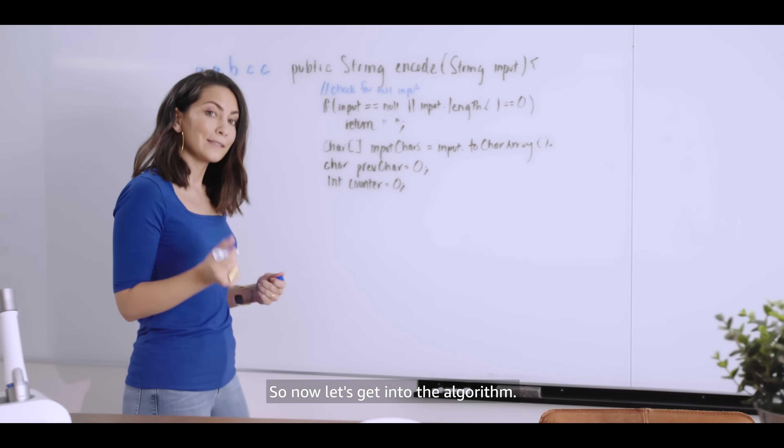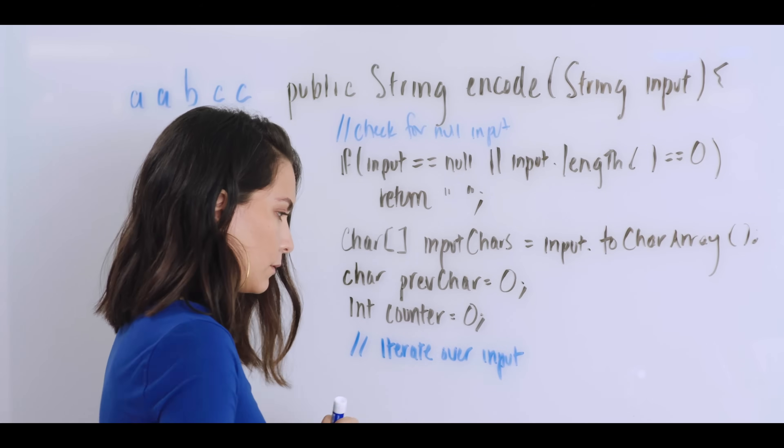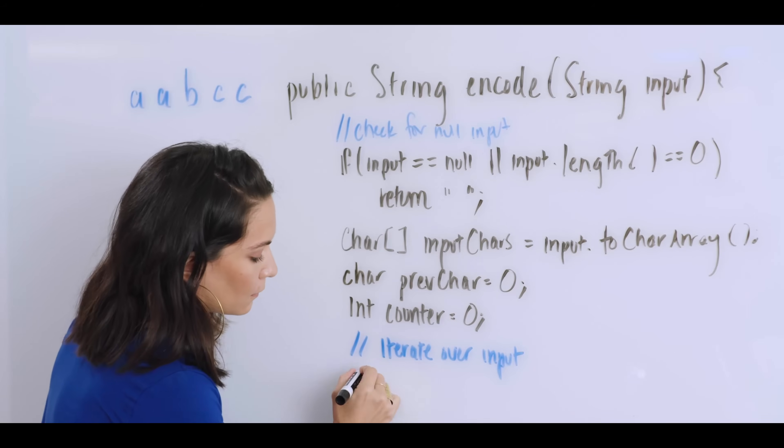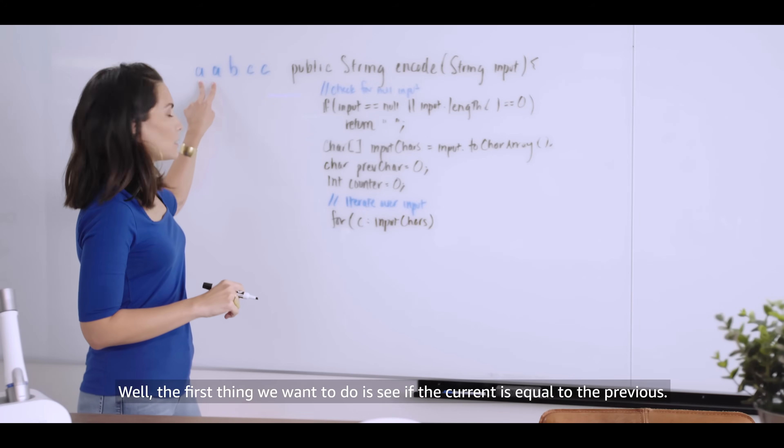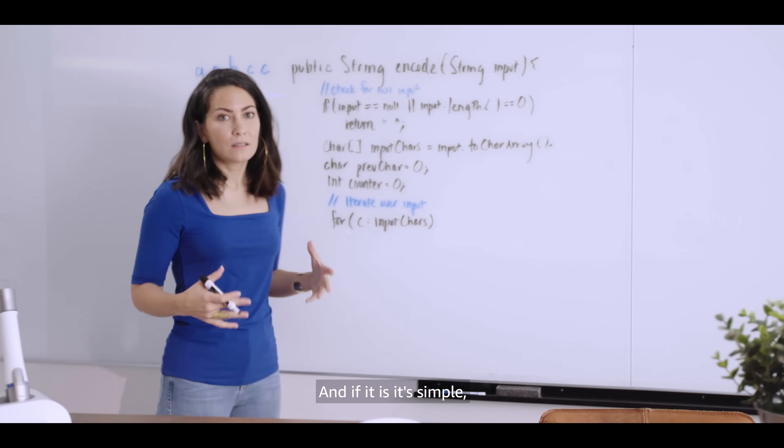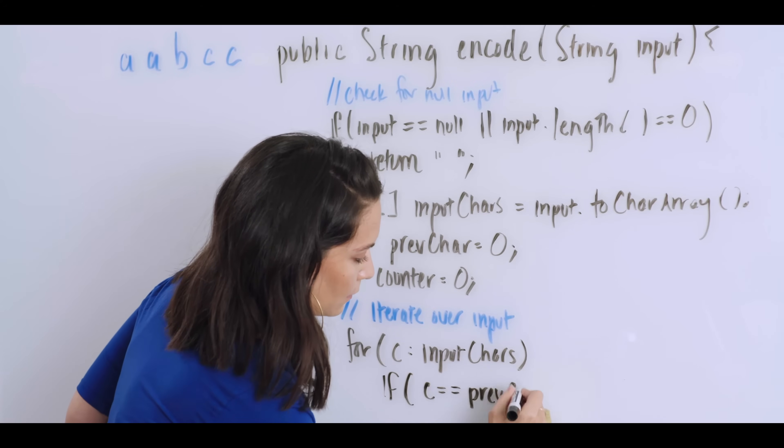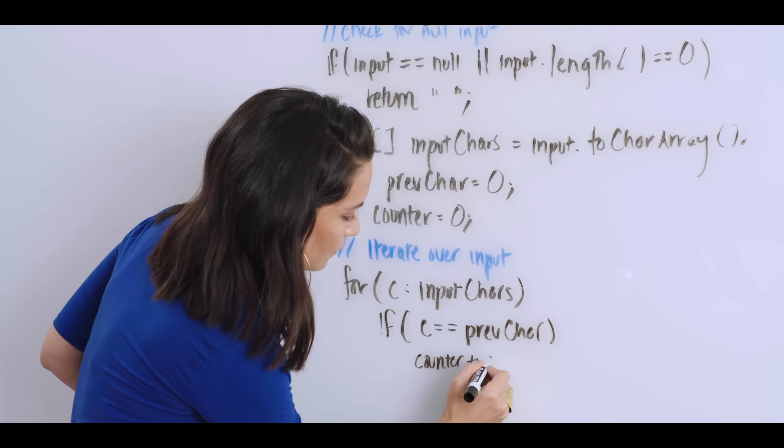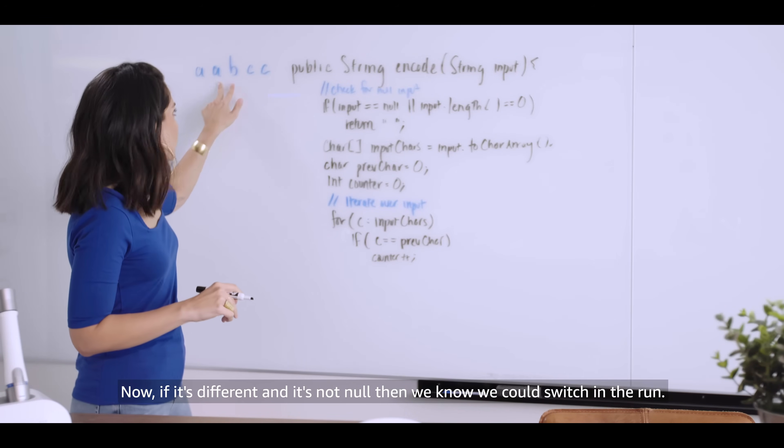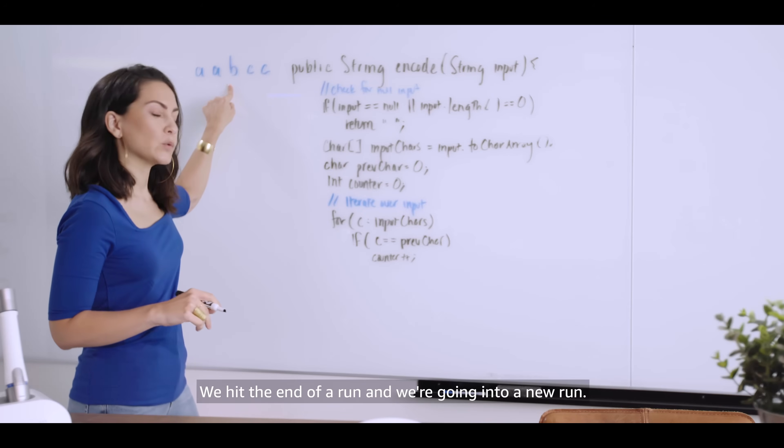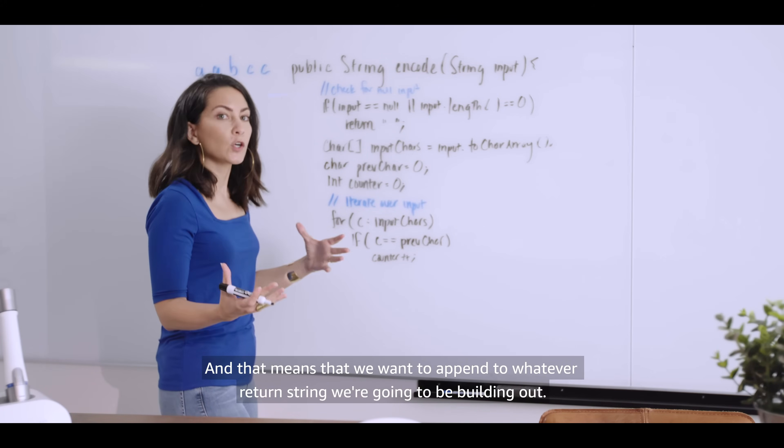So now let's get into the algorithm. The first thing we want to do is see if the current is equal to the previous. And if it is, it's simple. We just increment the counter. Now, if it's different and it's not null, then we know we've hit a switch in the run. We've hit the end of a run and we're going into a new run. And that means that we want to append to whatever return string we're going to be building out.